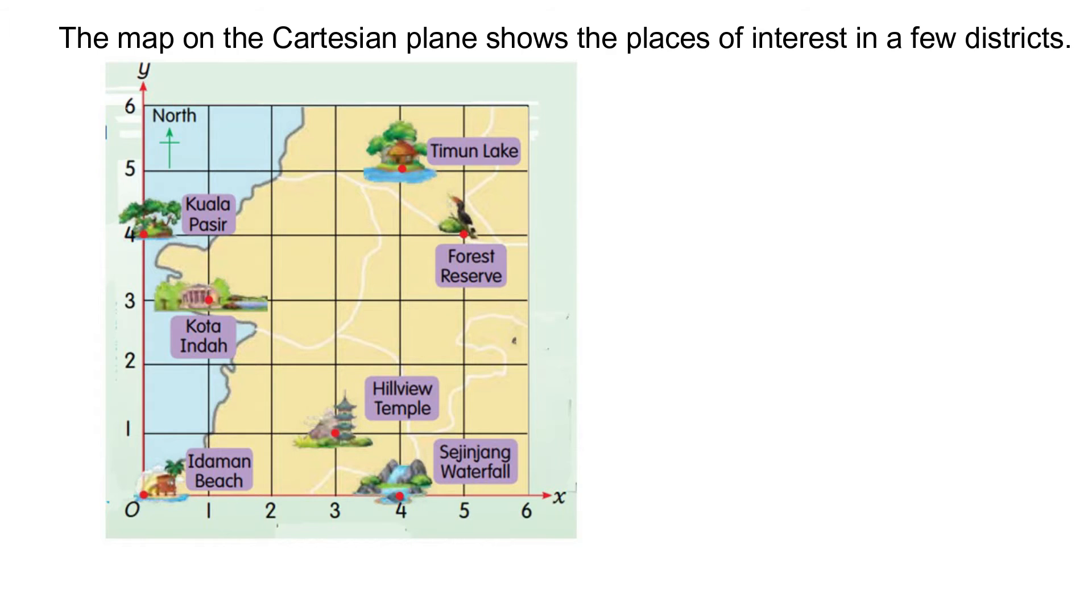Look at this map on a Cartesian plane. It shows the places of interest in a few districts. The horizontal axis here is x-axis and the vertical axis here is y-axis.